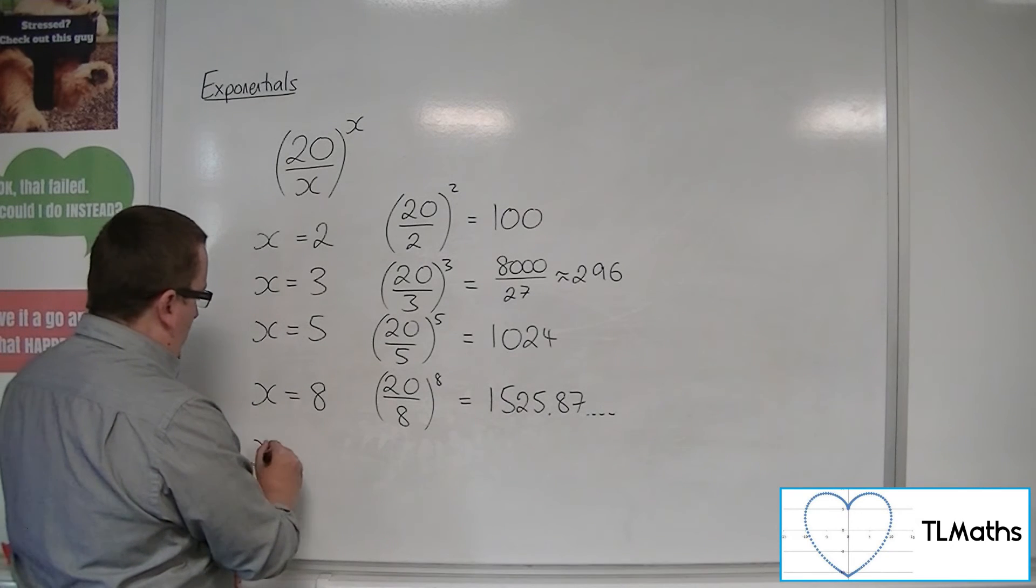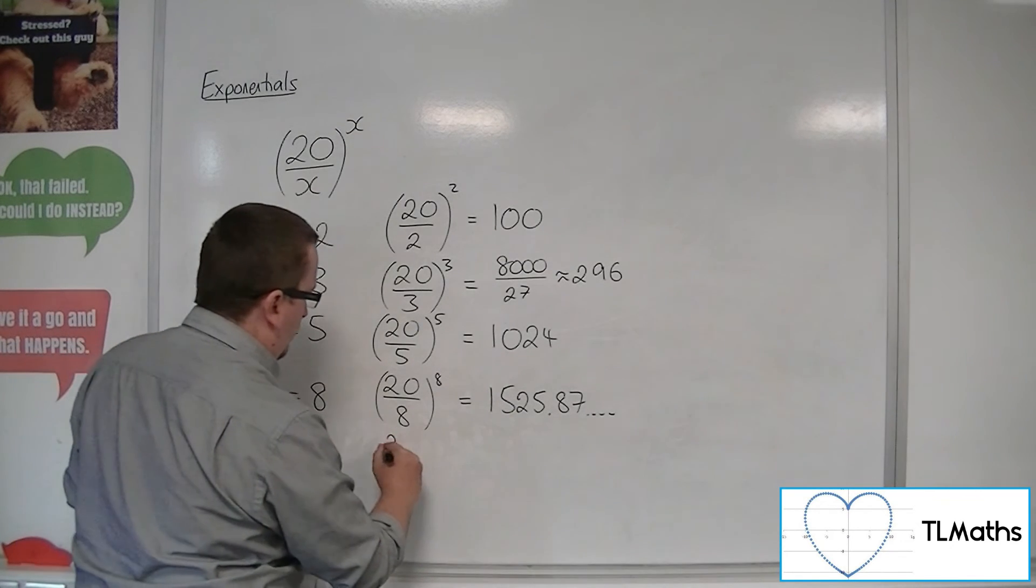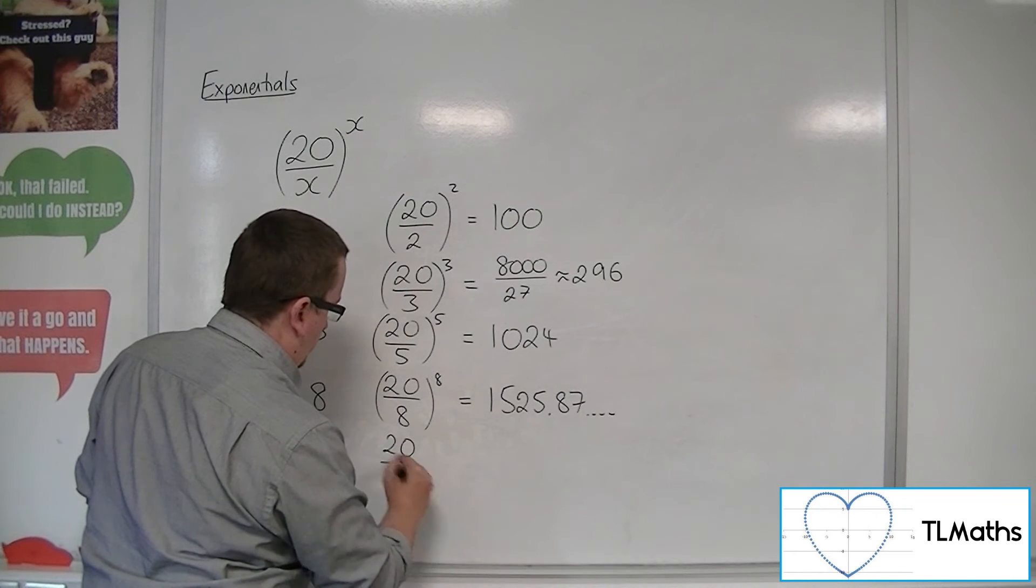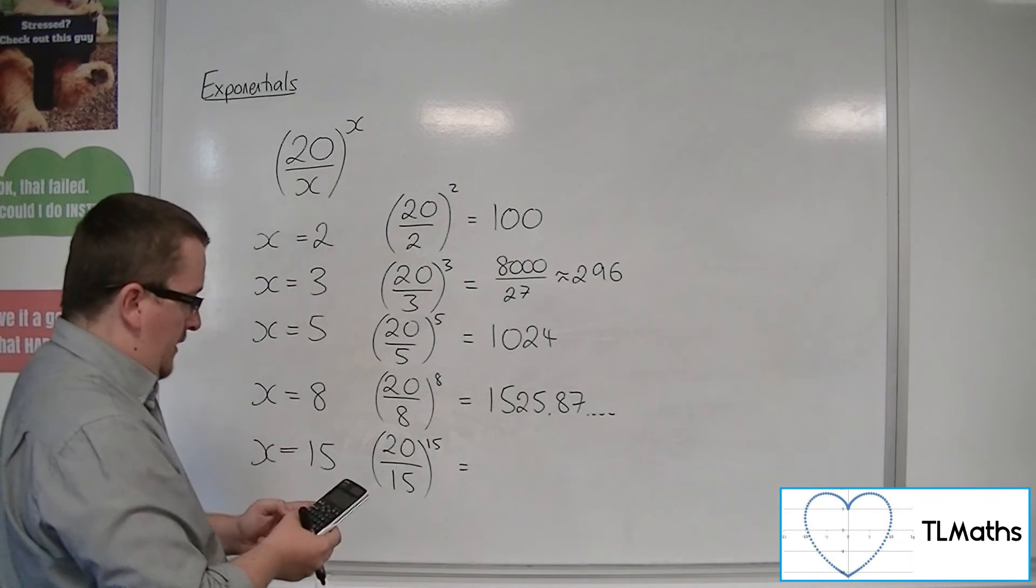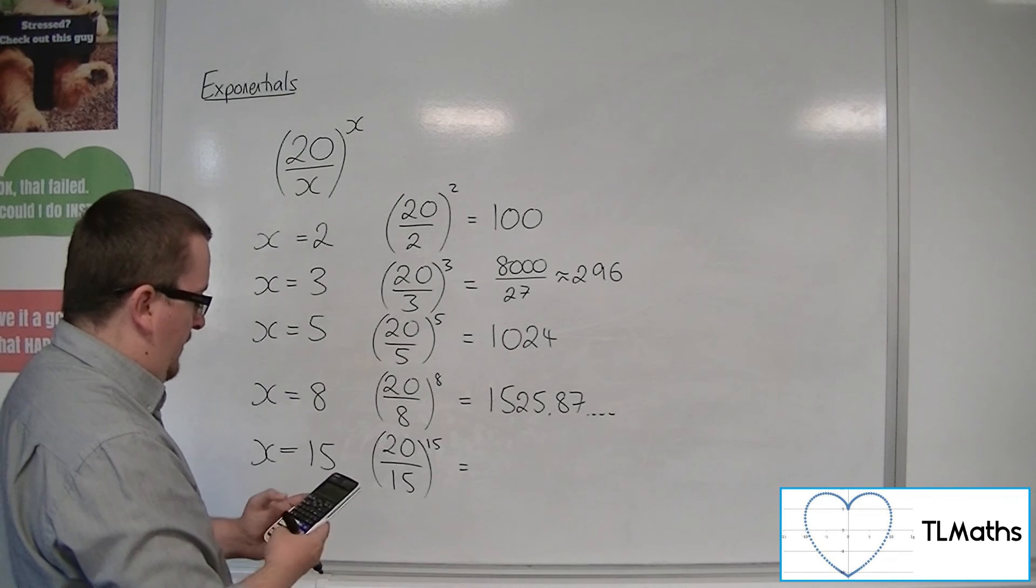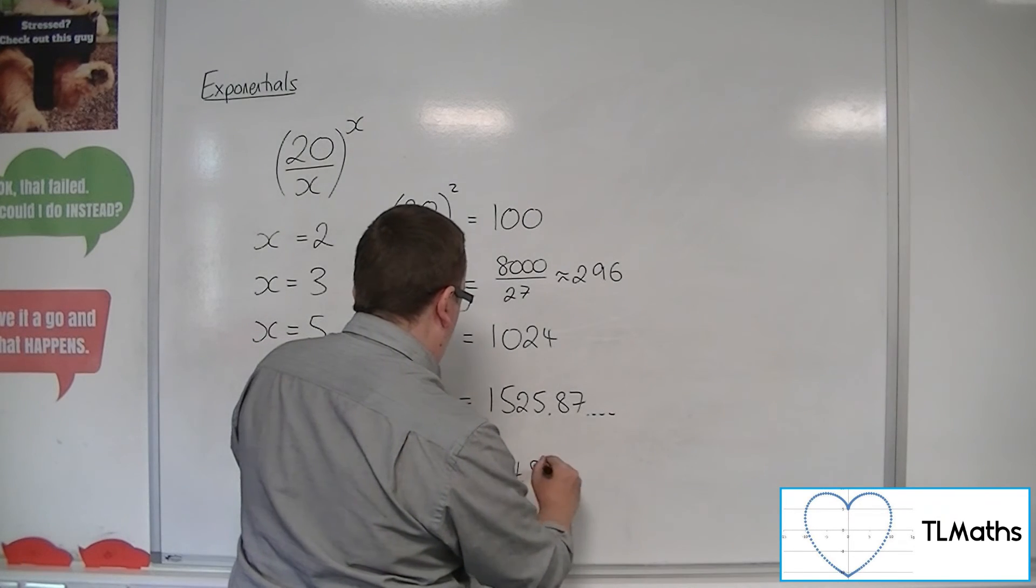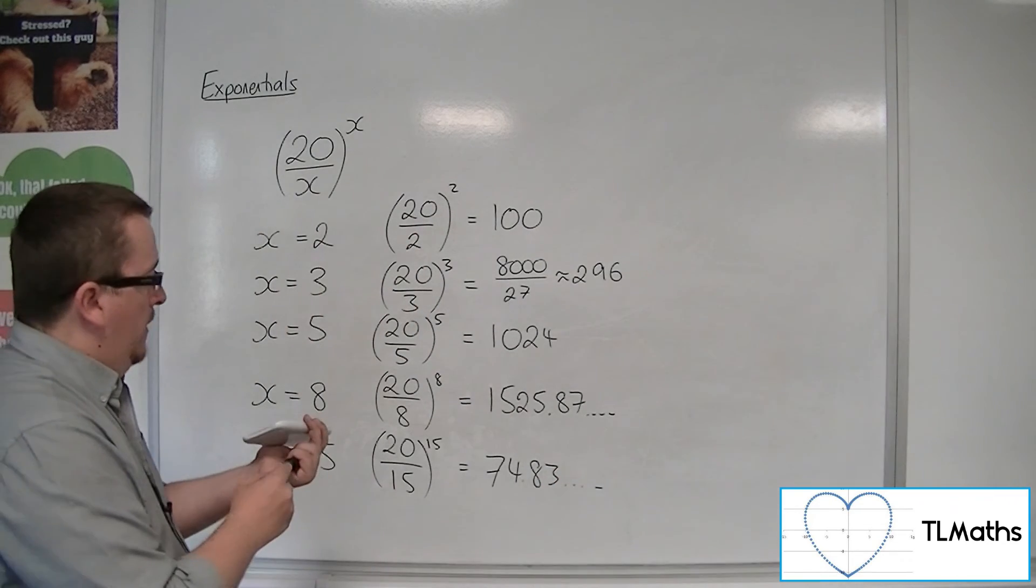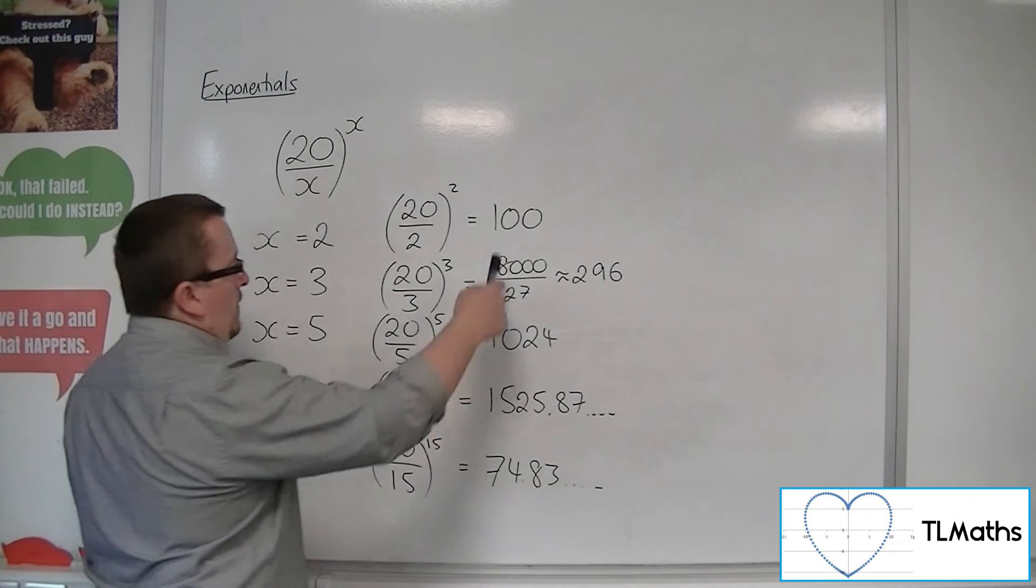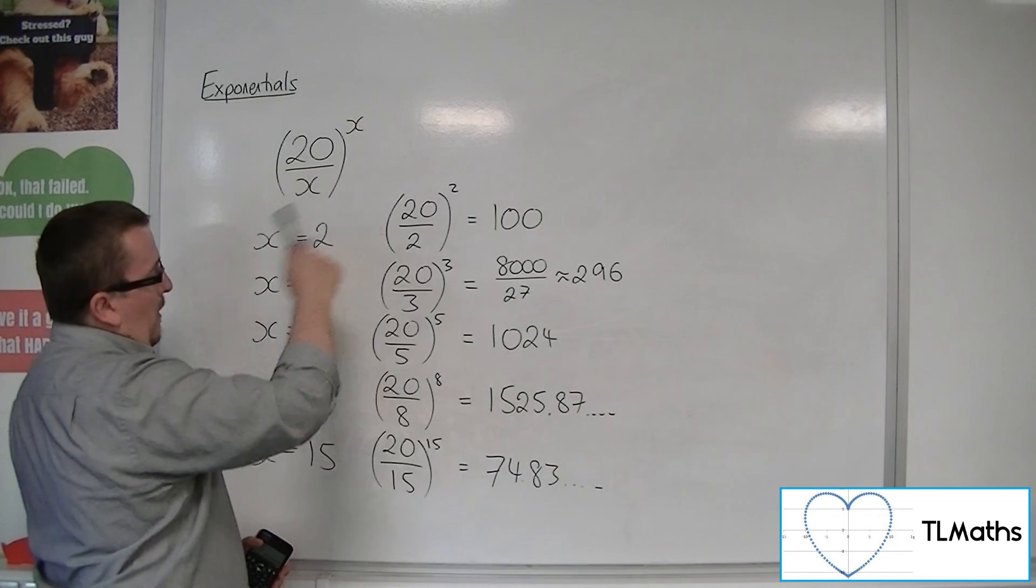Now how about when x is, I don't know, 15? So 20 over 15 to the power of 15. Now that is 74.83 to two decimal places. So something has happened, because we've now got a number that is less than when x was 2.